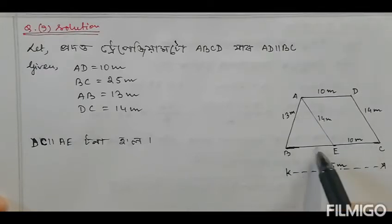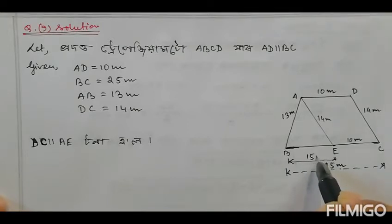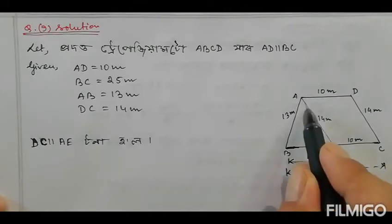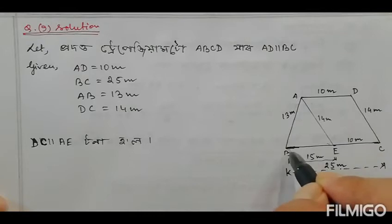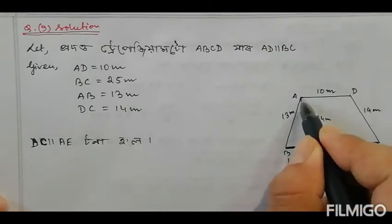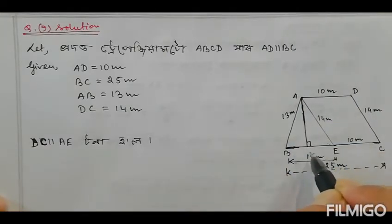When BC is 25m and AD is 10m, EC equals 15m. So we write EC is 15m.